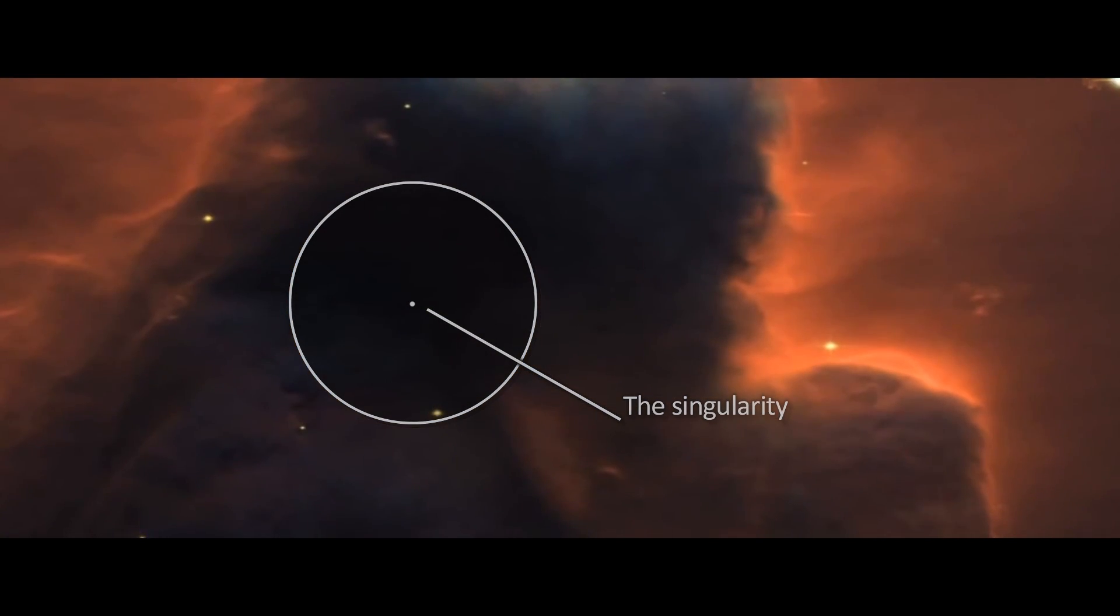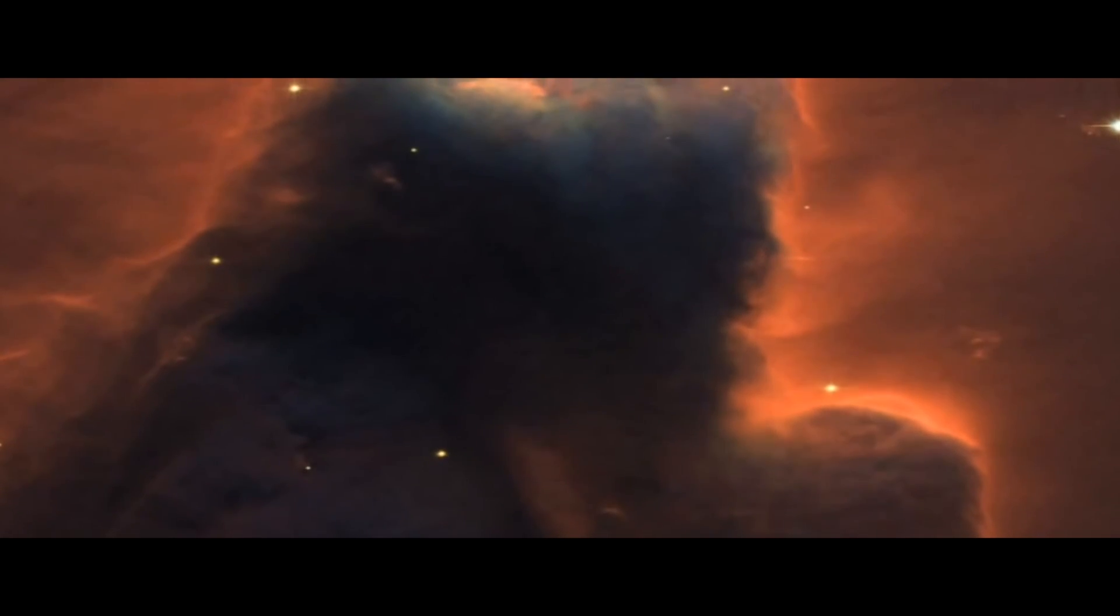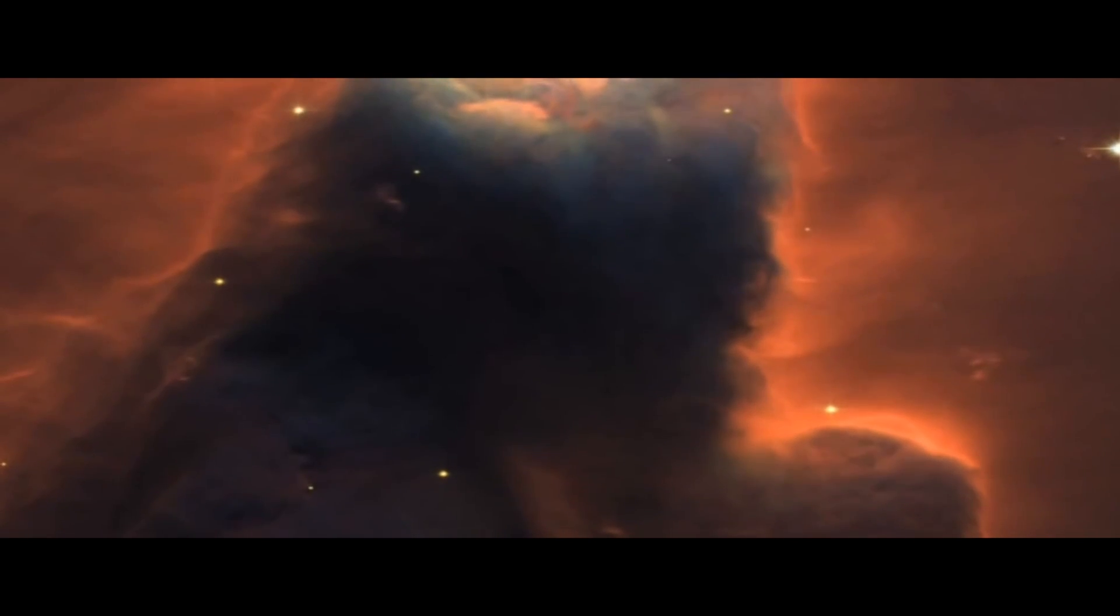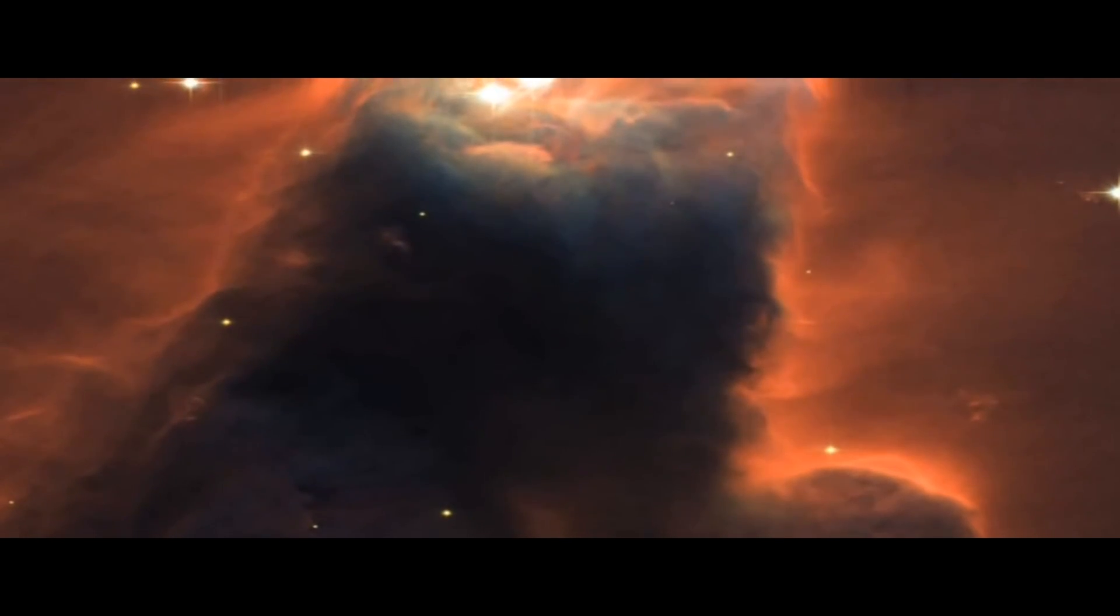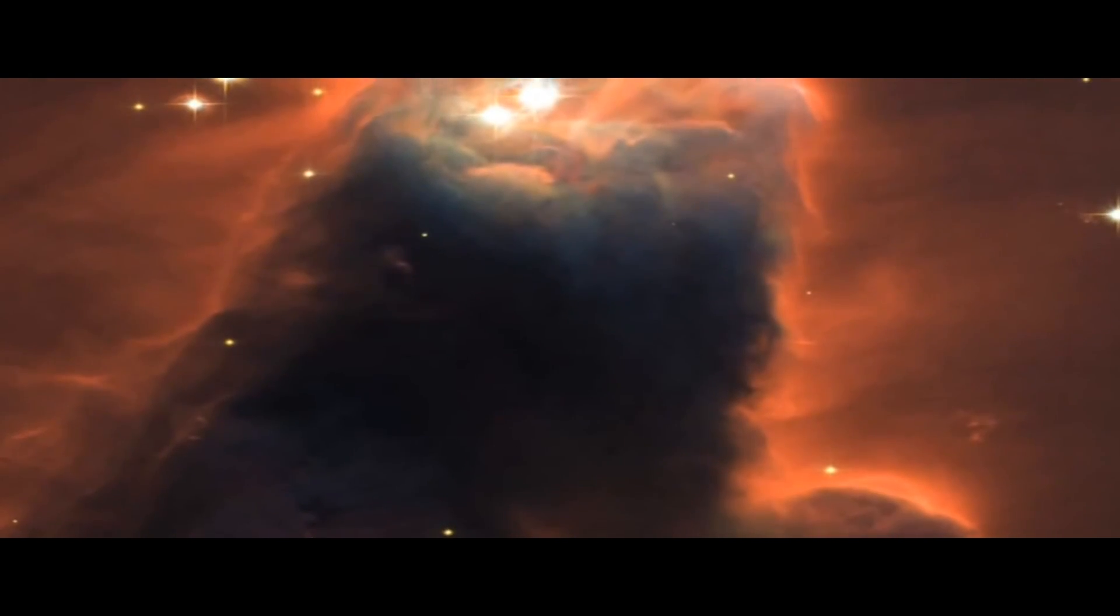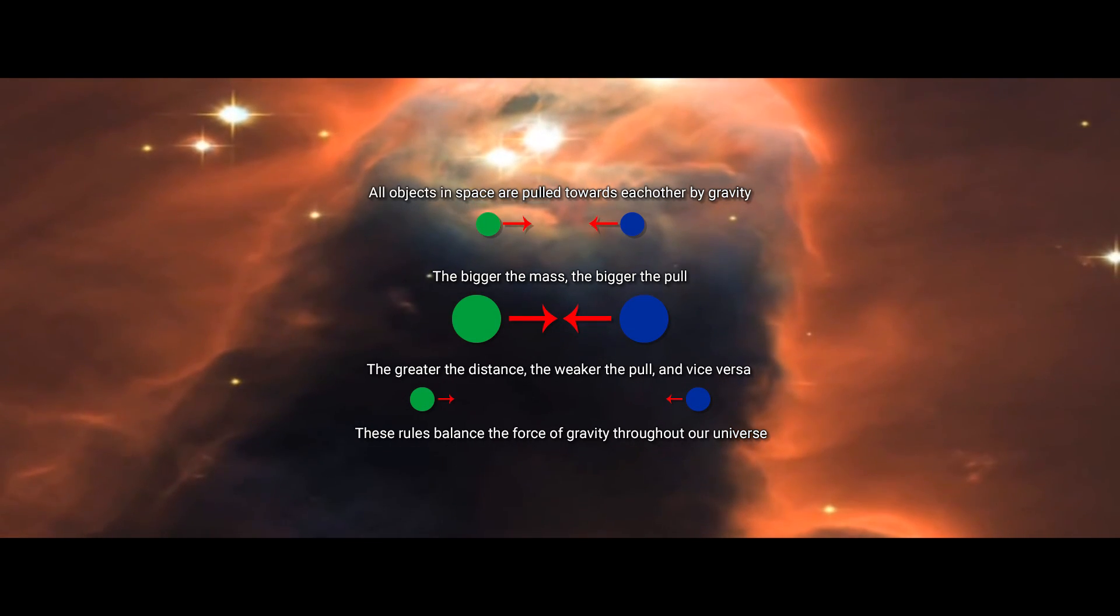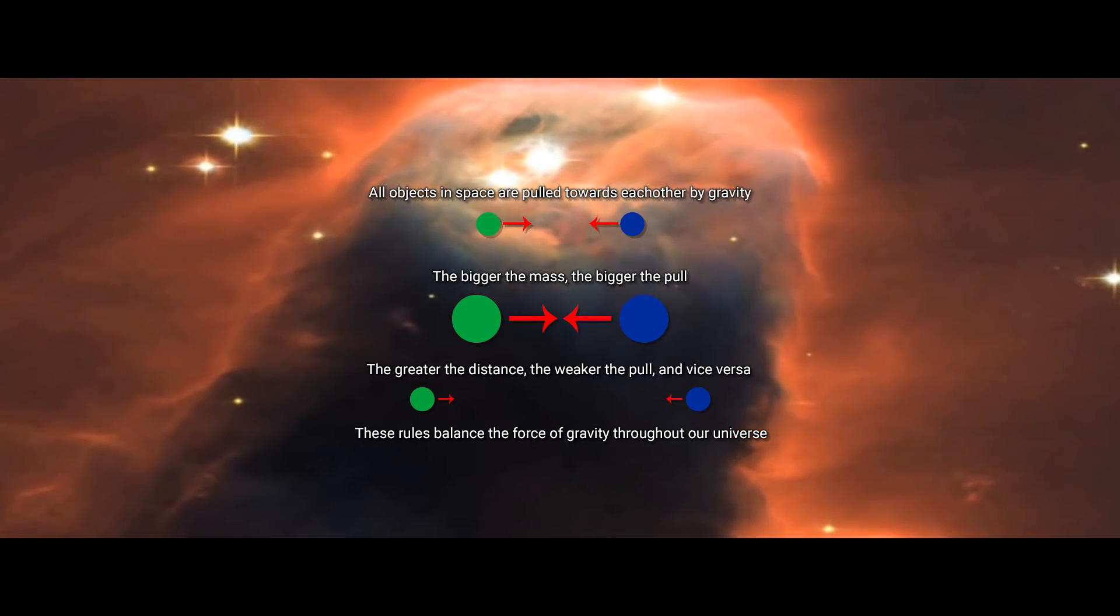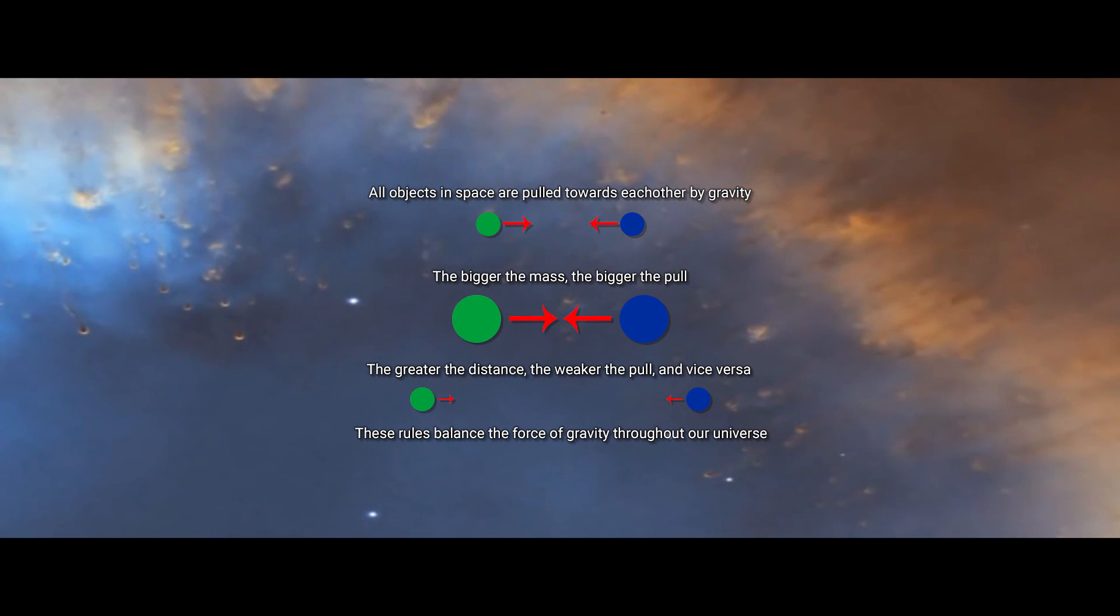We now have this infinitely tiny thing with an immense amount of matter. Because it has so much matter but no volume, its gravitational force gives it some interesting properties. As you probably know, gravity gets stronger the closer you get. This is why our planet isn't pulled towards all the other more massive stars in our universe as much as it is towards our own smaller sun being so much closer, allowing us to stay in orbit around it.